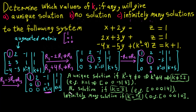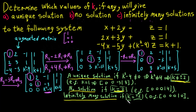So our final answer is: no solution when K equals 2; a unique solution when K is not equal to plus or minus 2; and infinitely many solutions when K equals negative 2. I will put more examples in the next video — see you then, thank you.